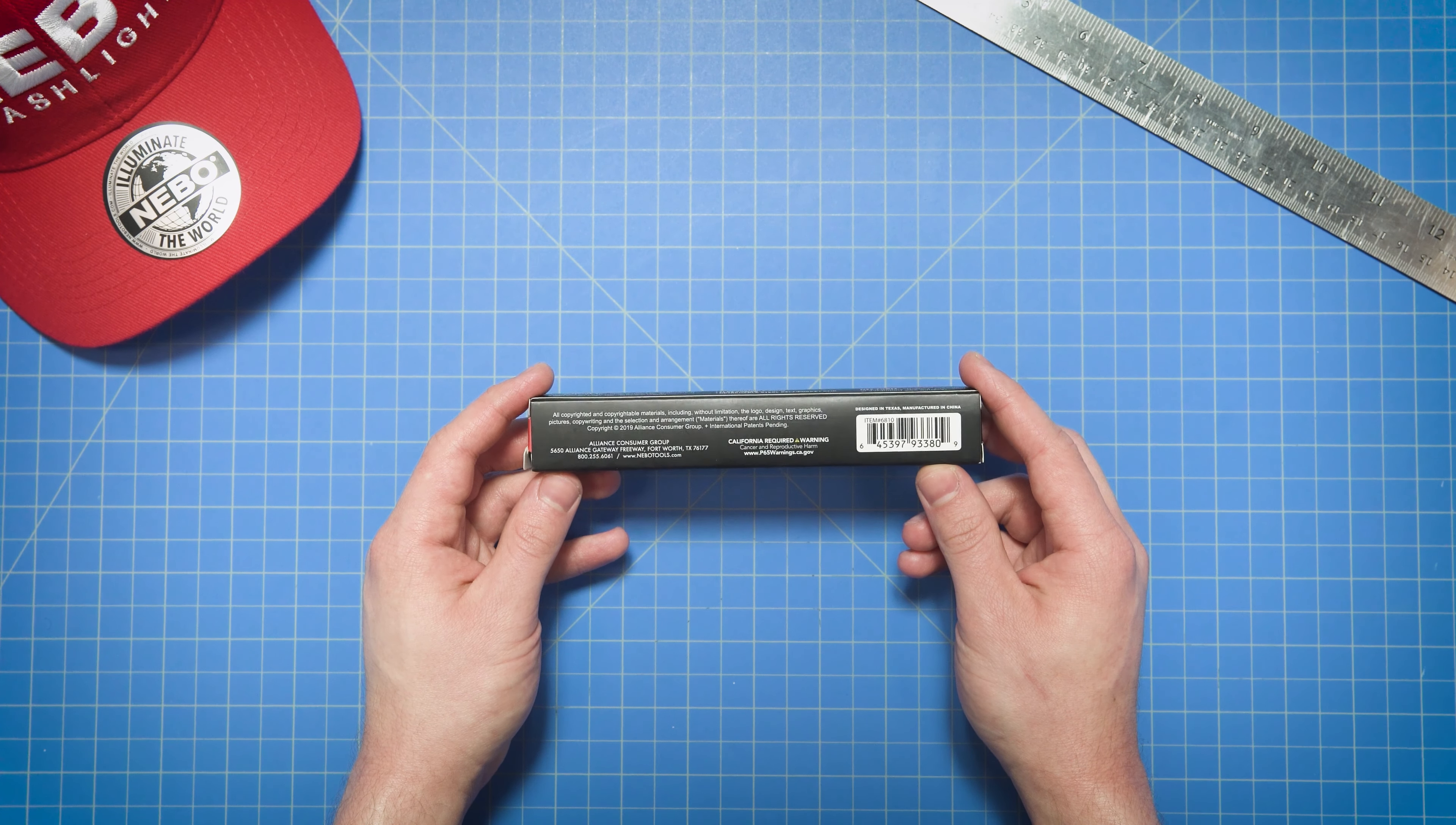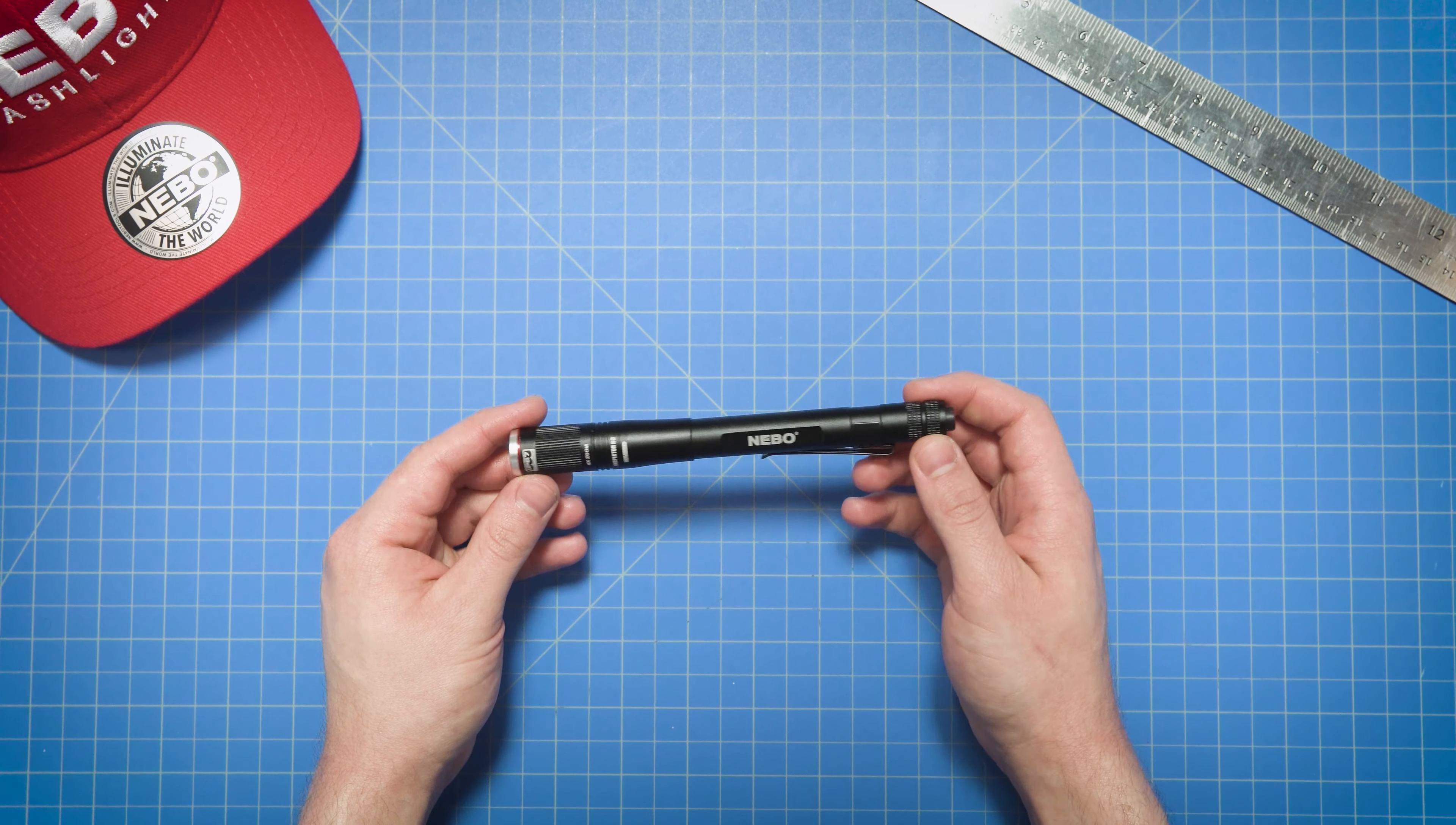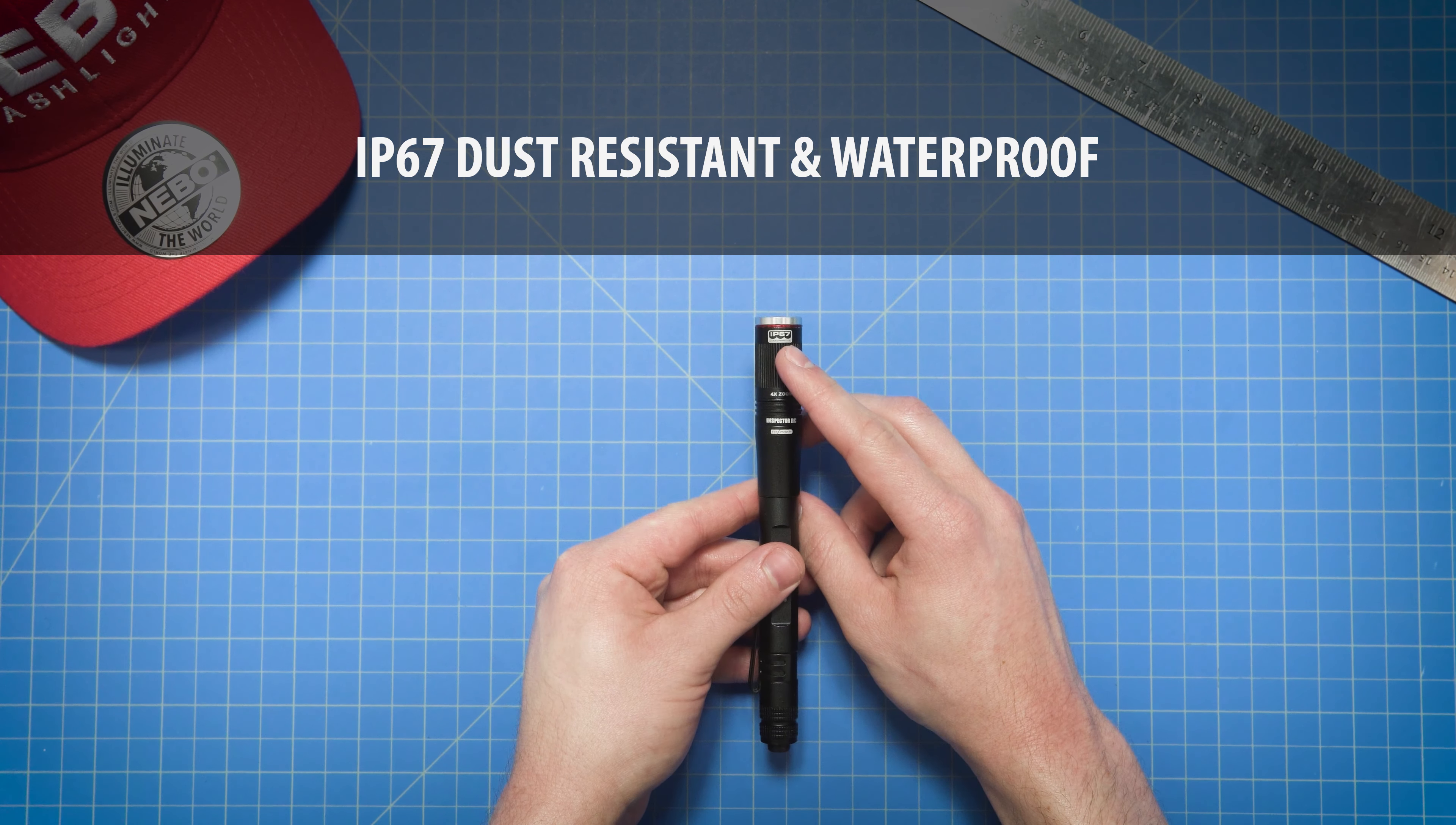You'll find all the instructions printed on the gift box, but let's go ahead and get it out of the box to take a look. The first thing you'll notice when removing the Inspector RC from the box is its sleek anodized aircraft grade aluminum body. In addition to having a good look, it's also a practical way to protect the light. The Inspector RC is impact resistant up to one meter and has an IP67 dust resistant and waterproof rating.